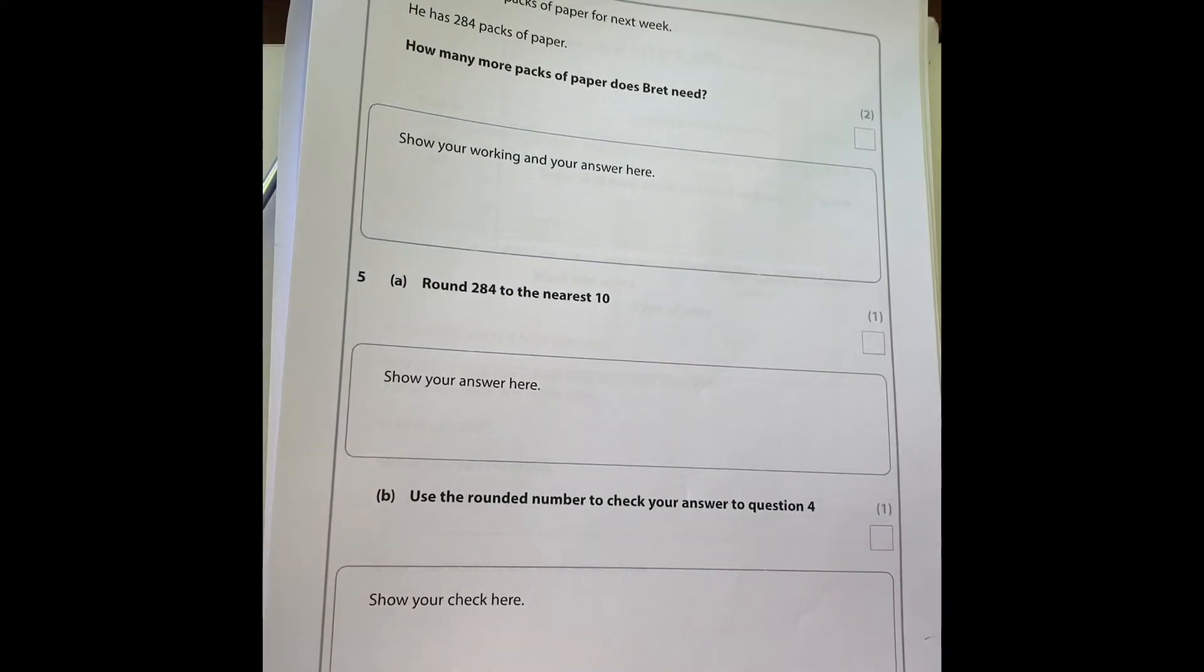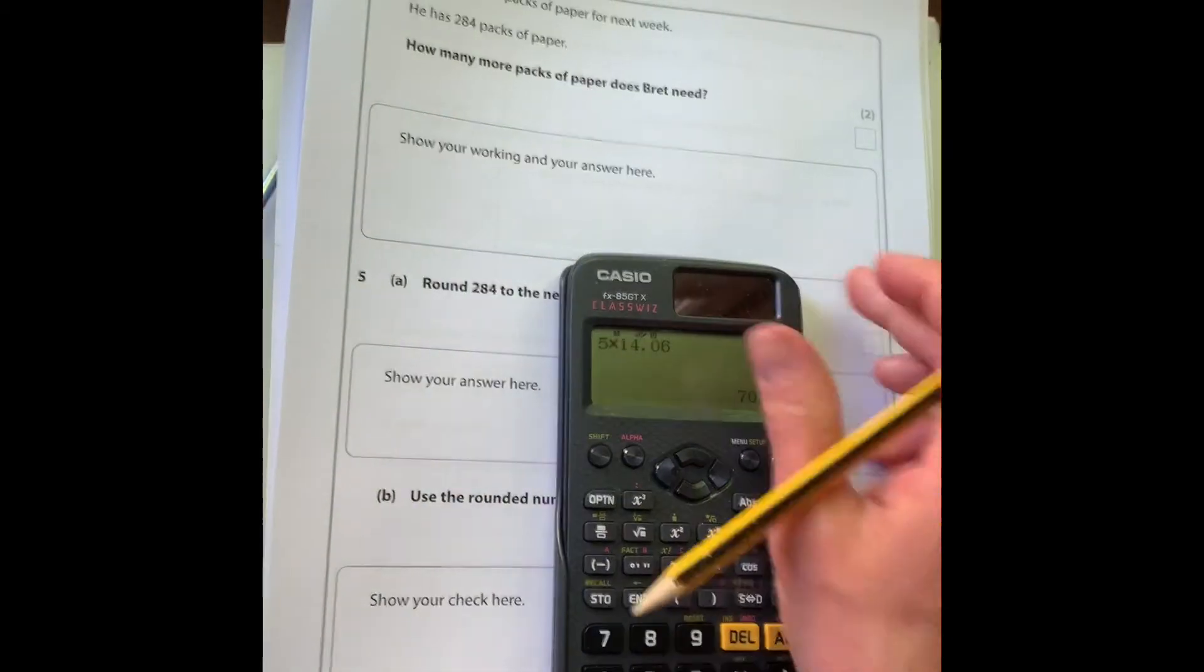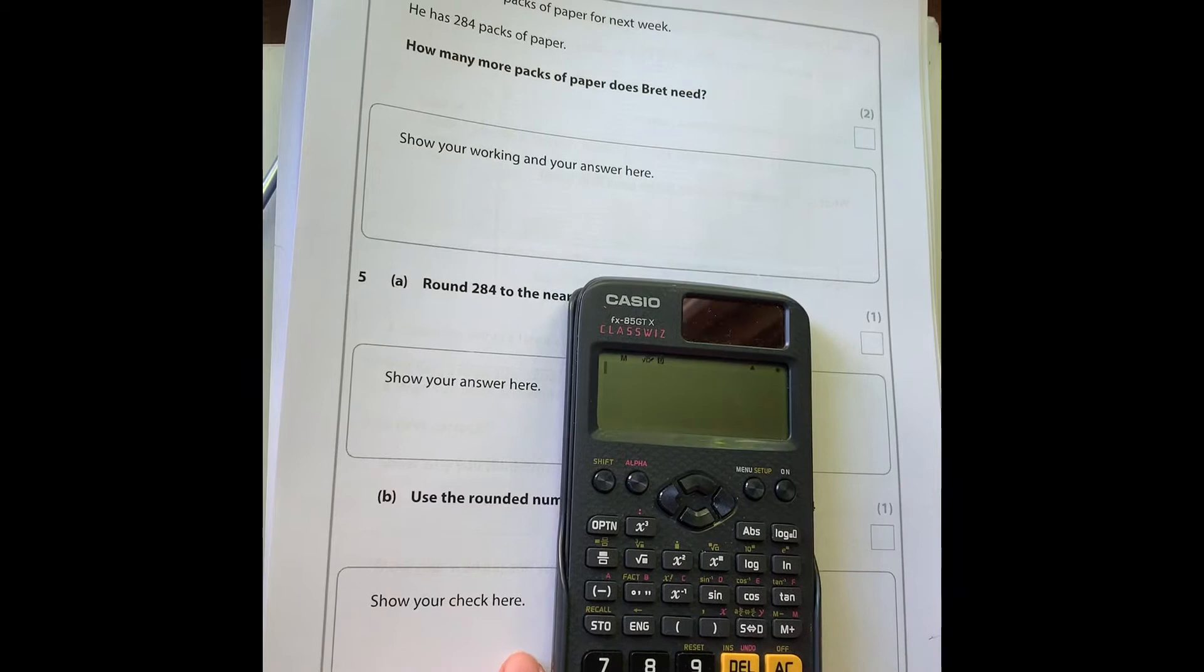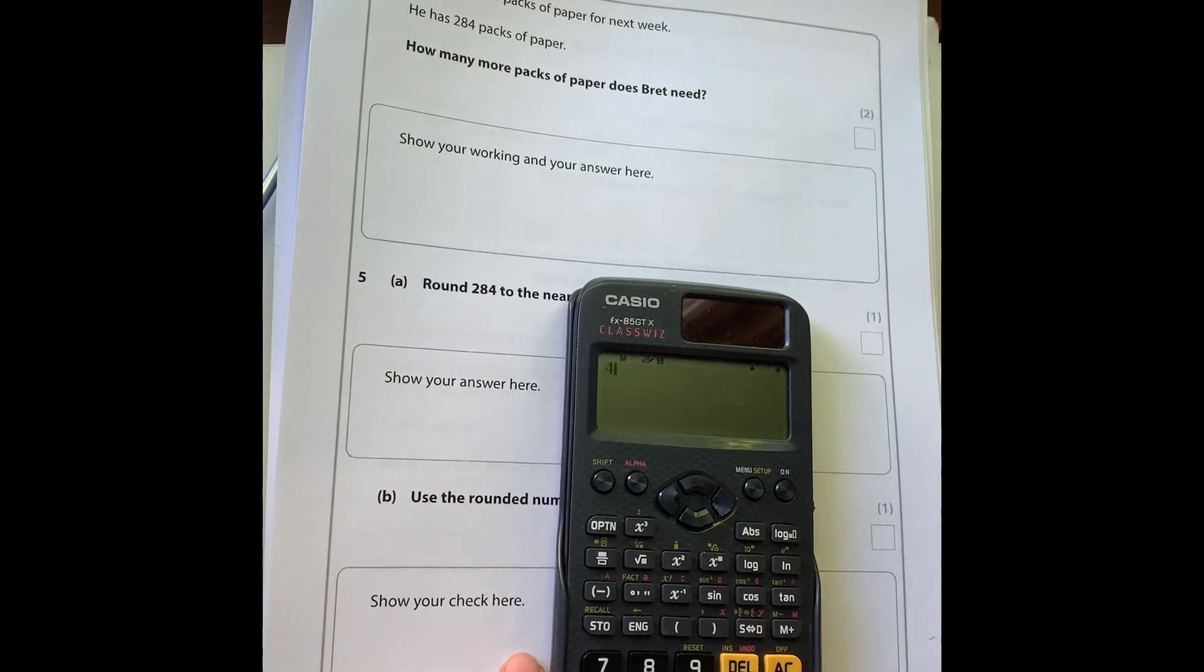Number four: Brett needs 450 packs of paper for next week. He has 284 packs of paper. How many more packs of paper does Brett need? You could do this as a column subtraction, but I'm going to use my calculator as it is a calculator paper. I'm going to do 450 take away 284.